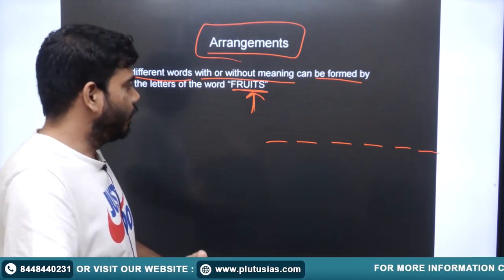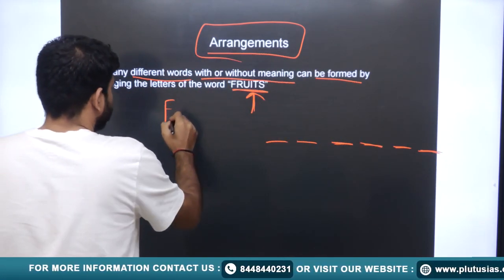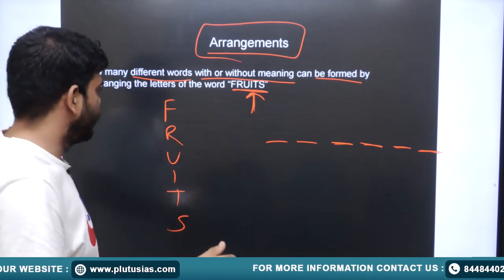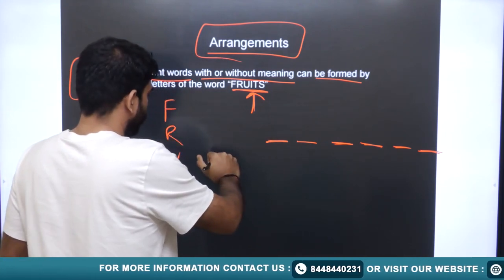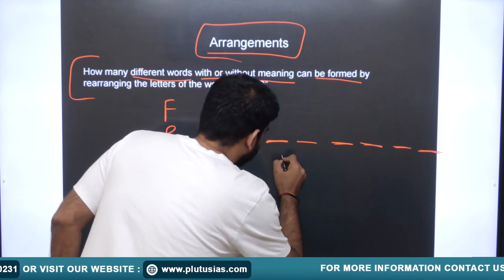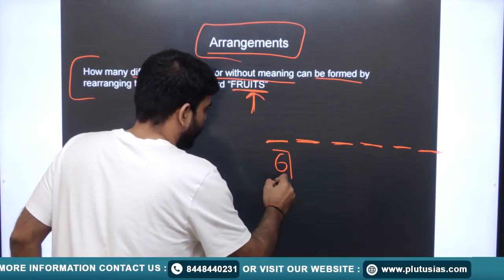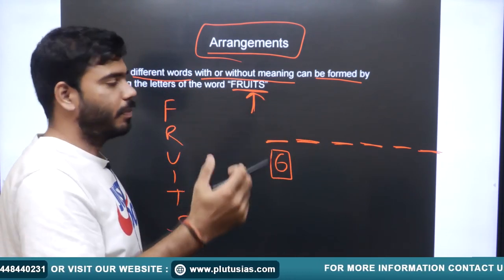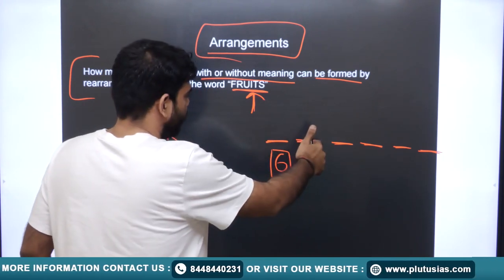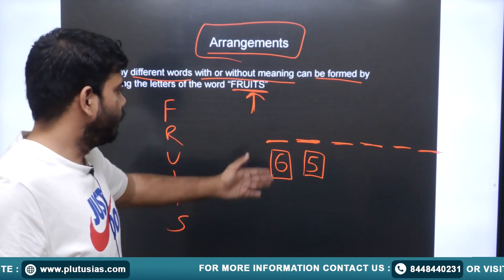Starting from this first example, we'll derive and understand how we arrive at the formula. We have six letters and must find all possible arrangements. In the first place, we can put any of these six letters — so there are six possibilities for the first place. For the second place, since we've used one letter, we are left with five options.